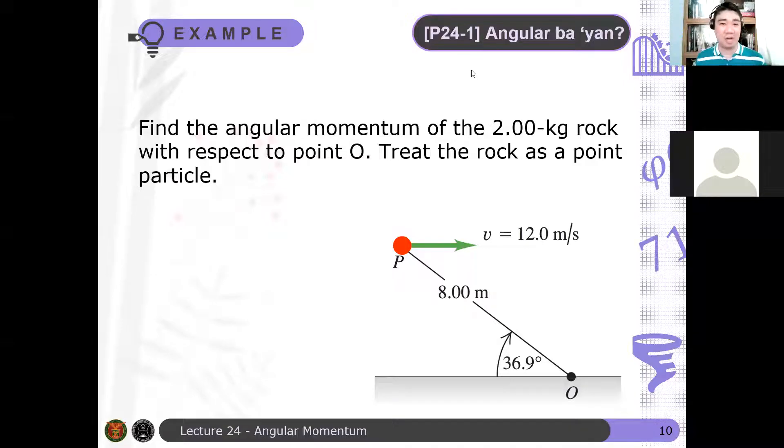Let's have an example here. Angular ba yan? You can always define an angular momentum even if it seems that a particle doesn't rotate. For example, this example here. Find the angular momentum of a 2-kilogram rock with respect to some point O. Importante lang dito kung nasaan nagpo-point yung, nasaan yung axis of rotation mo. With respect to what? That's an important idea in angular momentum. Treat the rock as a point particle.